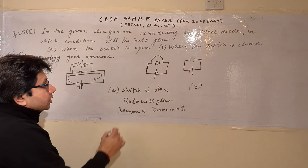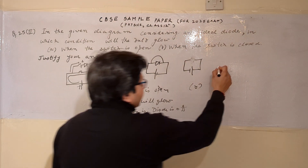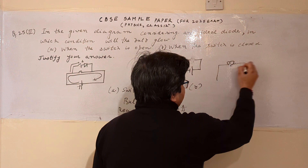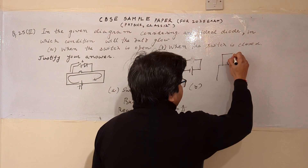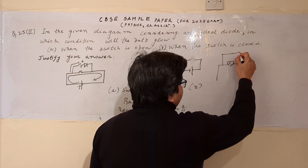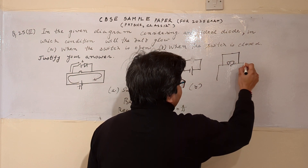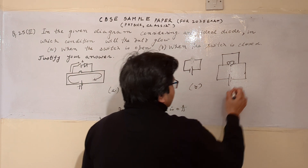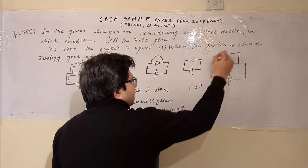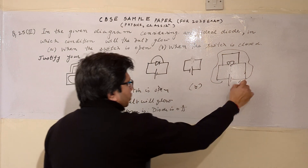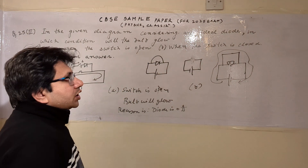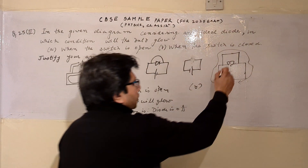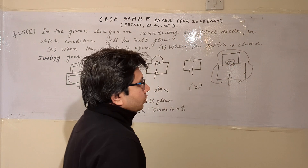When the diode is forward biased it acts as a short circuit. The situation is: the bulb has a short circuit in its parallel path. When there is a short circuit, all the current will pass through the short circuit and no current will pass through the bulb.